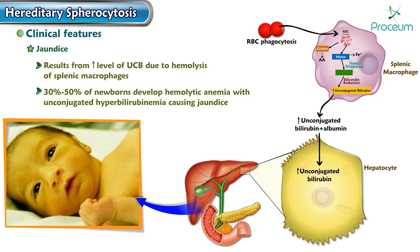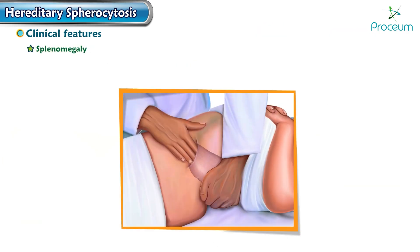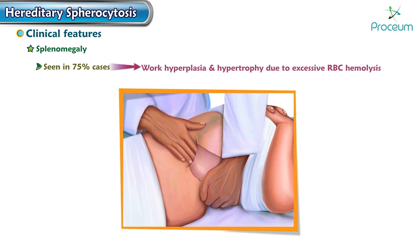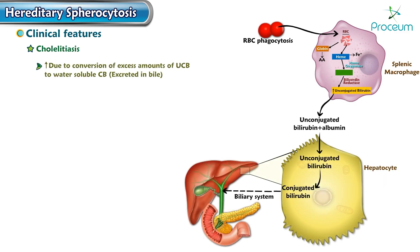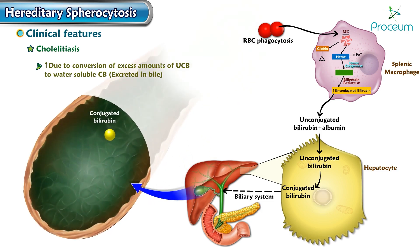Splenomegaly is seen in about 75 percent of cases, resulting from work hyperplasia and hypertrophy due to excessive RBC hemolysis. Cholelithiasis is increased due to increased liver conversion of excessive unconjugated bilirubin to water-soluble conjugated bilirubin. This is excreted in bile, and conjugated bilirubin is converted back to unconjugated bilirubin in the gallbladder, which combines with calcium to form black calcium bilirubinate stones.